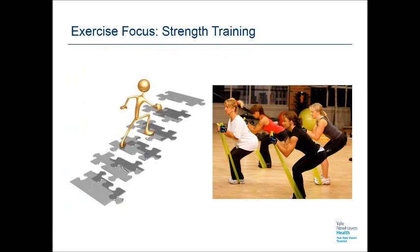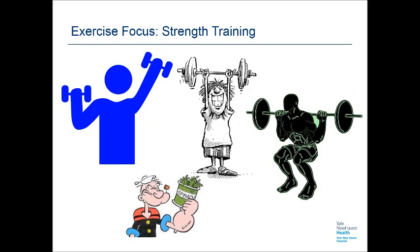When developing a strength training program for the older adult population, specificity of exercise is the key, as this population may have a limited tolerance for activity. By selecting activities that most closely correlate to their daily tasks, the exercise becomes more meaningful and benefits are more easily demonstrated through greater ease of task accomplishment. There are some clinicians who may be hesitant about implementing a strength training program for older adults, particularly those with medical comorbidities. When implemented using reasonable clinical judgment, it is possible to safely increase strength without injury or exacerbation of medical conditions.